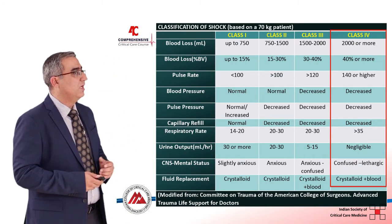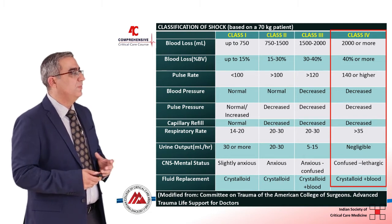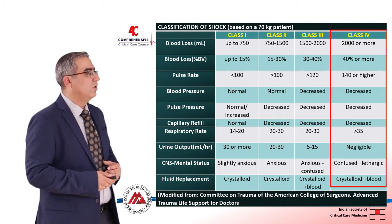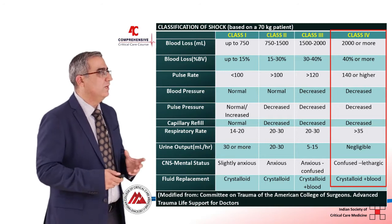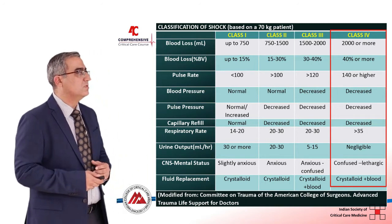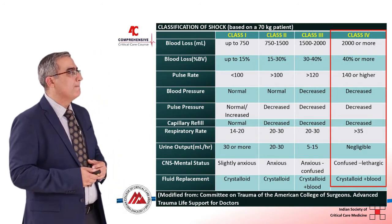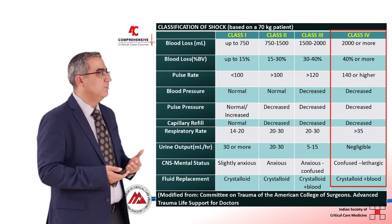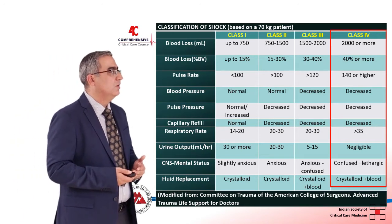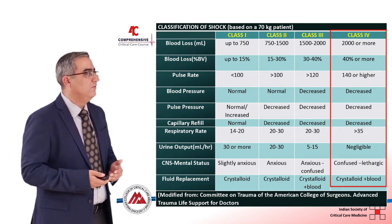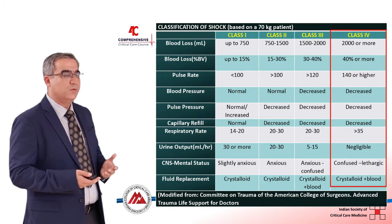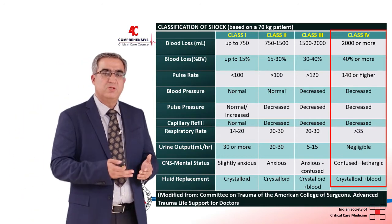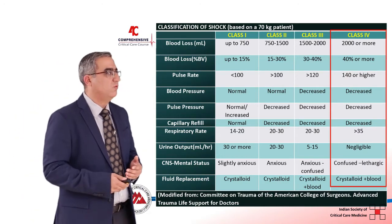This table shows the classification of shock based on ATLS protocols, divided into 4 classes — Class 1, 2, 3, and 4. Depending on the blood loss, pulse rate, blood pressure, capillary refill time, respiratory rate, urine output, and mental status, we classify the patient from Class 1 to Class 4.